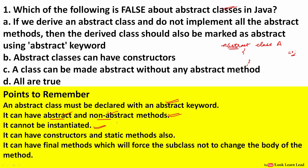An abstract class cannot be instantiated — objects of the abstract class cannot be made. However, abstract classes can have constructors, static methods, non-abstract methods, and also final methods. A final method forces the subclass not to change the body of that method. We will discuss the final keyword in further questions.